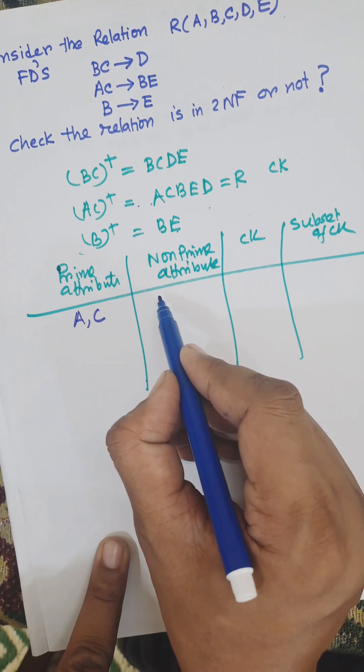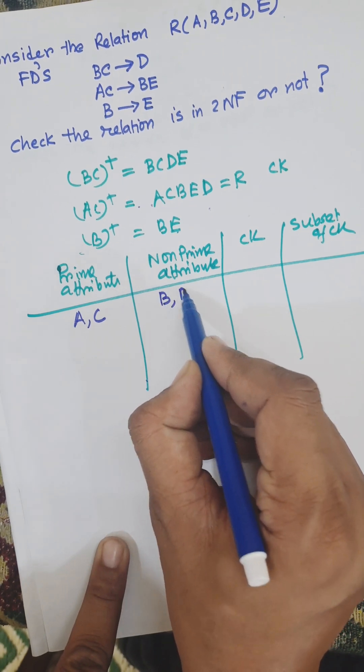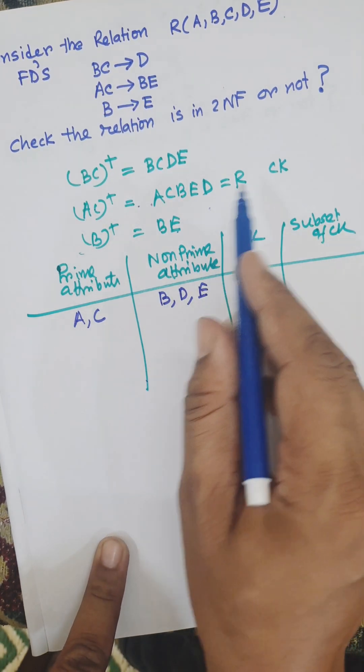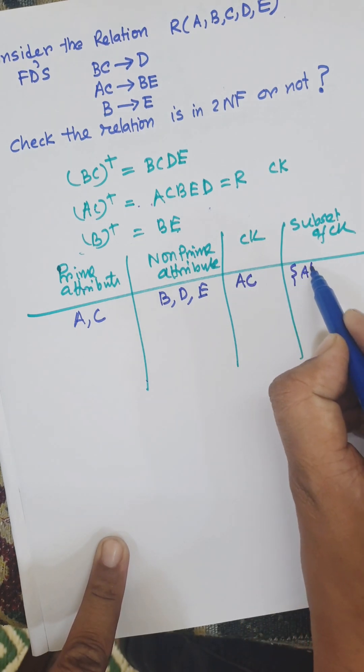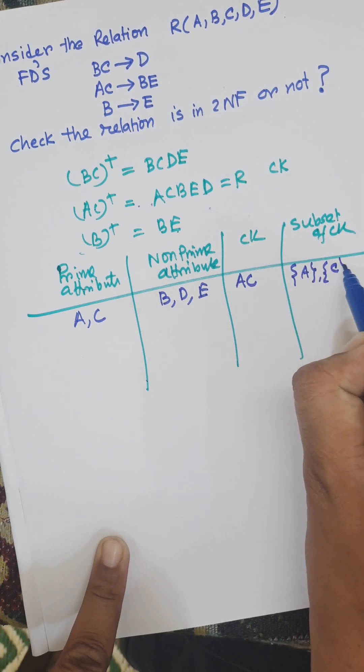Non-prime attributes are B, D, E. The candidate key is AC, and its subsets are A and C individually.